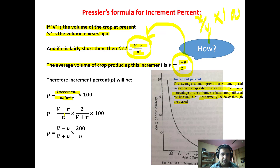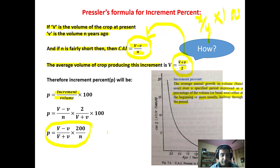Substituting, we put V minus v upon n and divide it by V plus v upon 2, which becomes 2 upon V plus v into 100 by simple arithmetic. Ultimately we get P is equal to V minus v upon V plus v into 200 by n. This is Pressler's formula in terms of volume.